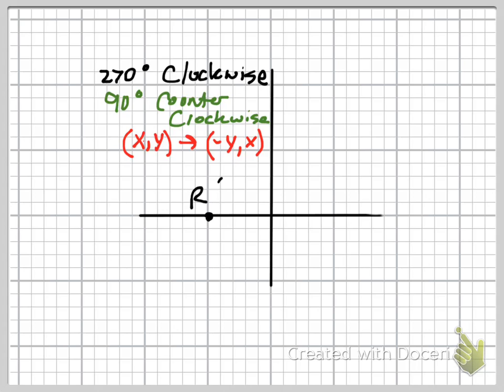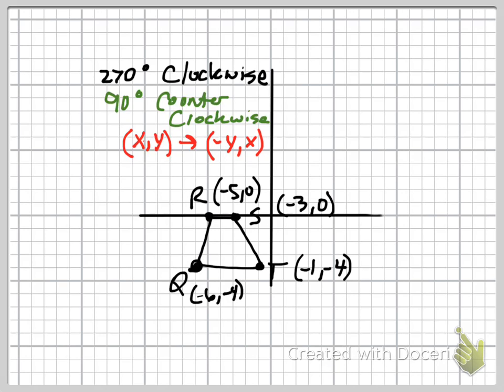Let's take a look at our shape here. There's r, s, t, and q. We'll go ahead and connect all of our shapes there. It looks like some type of trapezoid up on the screen. 90 degrees counterclockwise means we're going to be moving it to the right in this case. Let's take a look at point q.